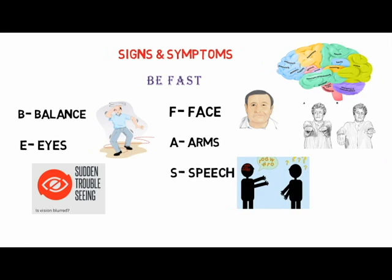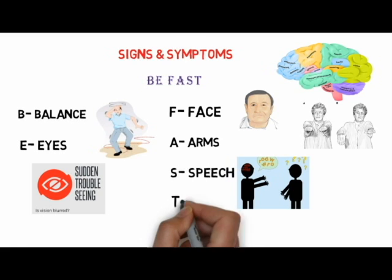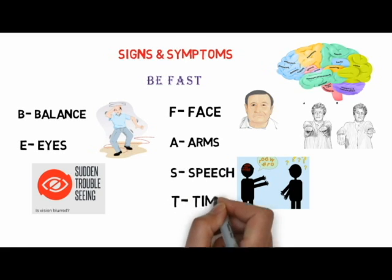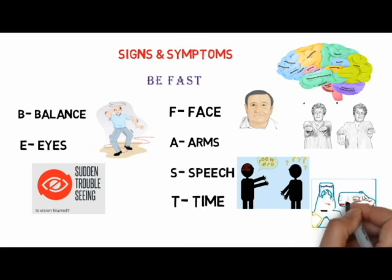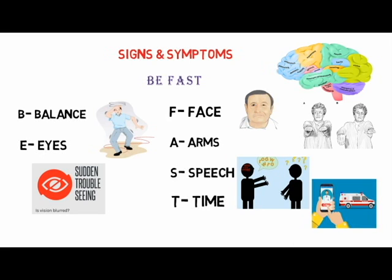S for Speech — their speech may be slurred or garbled, or the person may not be able to talk at all despite appearing to be awake. They may also have problems understanding what you are saying to them. T for Time — it's time to call emergency services immediately if you notice any of these symptoms or signs.